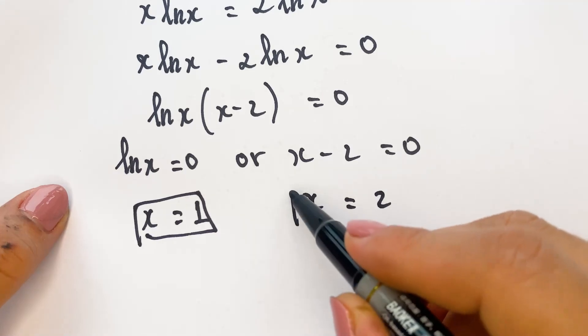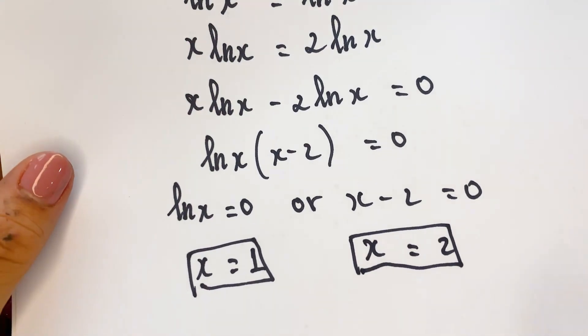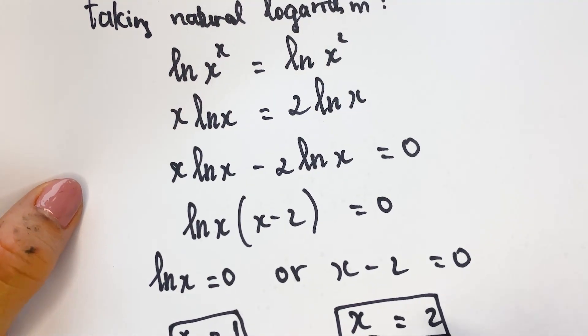So here you have x equals one, and for the second solution we can have x equals two. For the equation we have two values of x: x equals one and x equals two.